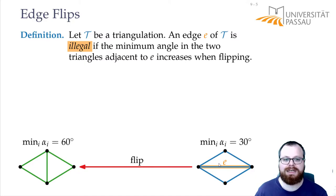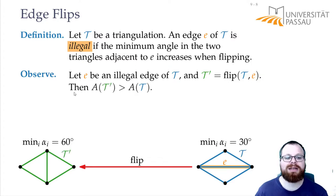If we have an illegal edge and we take the triangulation we get from the flip, then the angle vector for this triangulation is better than the angle vector of the old one. So we keep on improving the angle vector as long as we flip illegal edges.